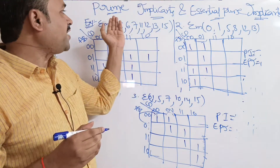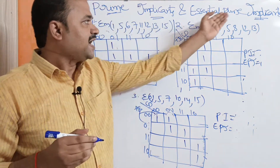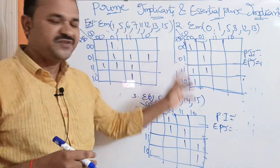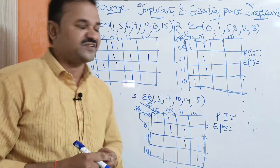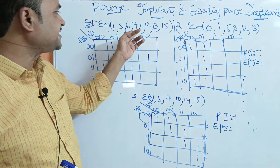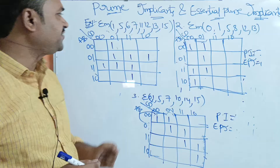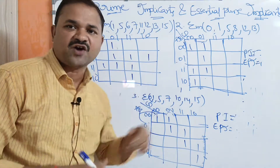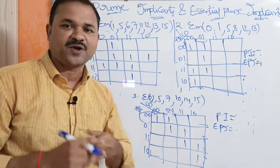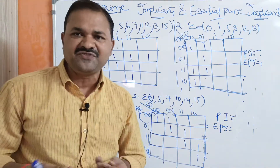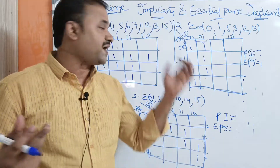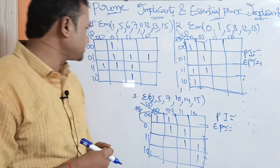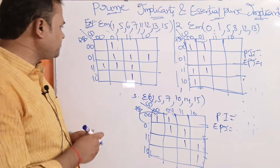Let us see how to find prime implicants and essential prime implicants in a Karnaugh map. We have three examples. The first example is Sigma M of 1, 5, 6, 7, 11, 12, 13, 15. For all these minterms, we write one in the Karnaugh map. The mapping is already done for all three problems. First let us simplify the problem and then find the number of prime implicants as well as essential prime implicants.